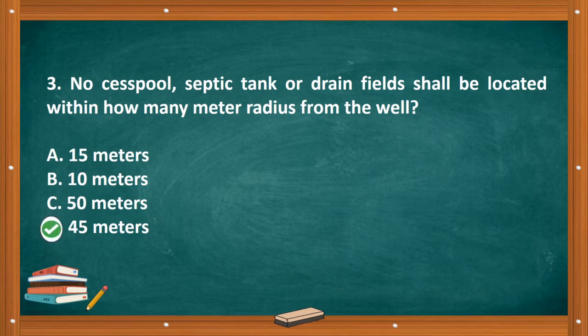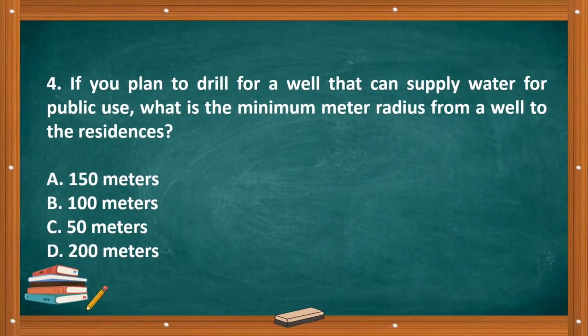A. 15 meters, B. 10 meters, C. 50 meters, D. 45 meters. The correct answer is letter D, 45 meters. Question number four: If you plan to drill for a well that can supply water for public use, what is the minimum meter radius from a well to the residences?